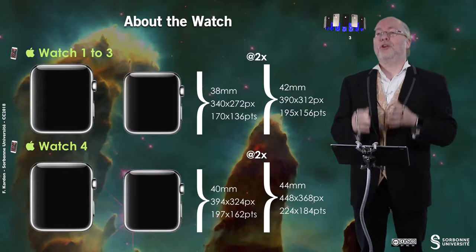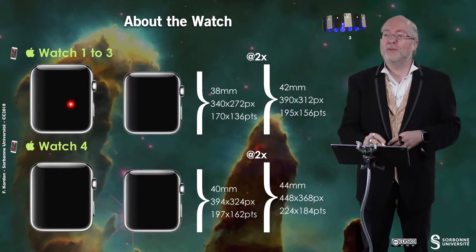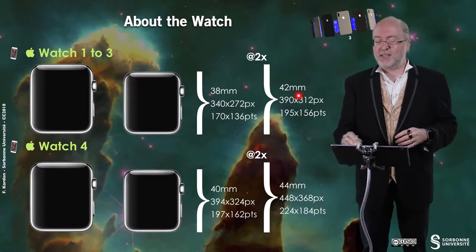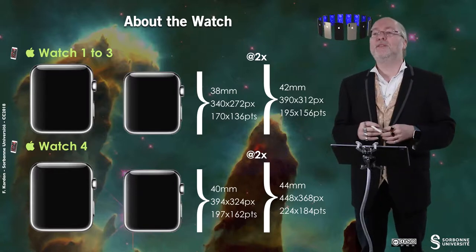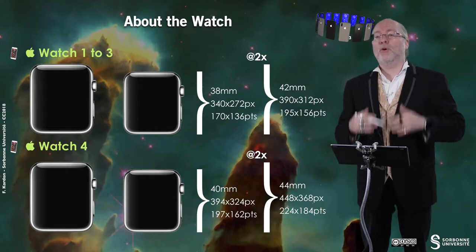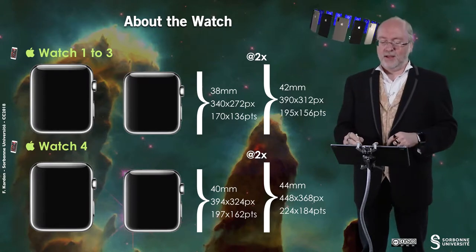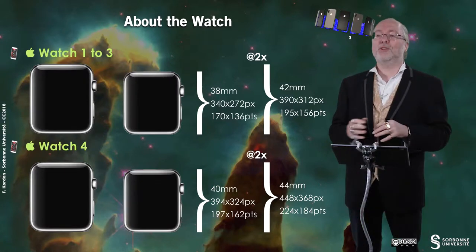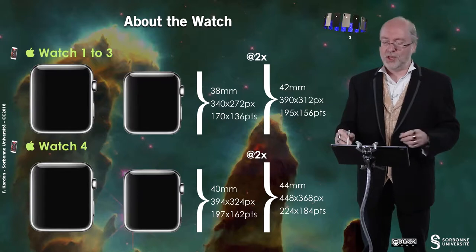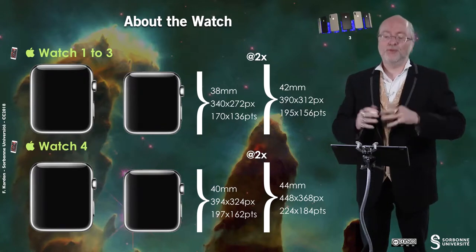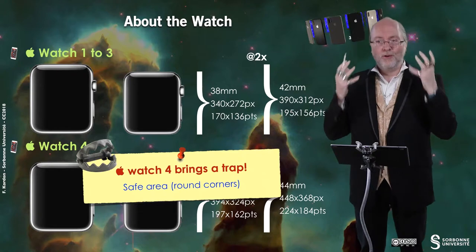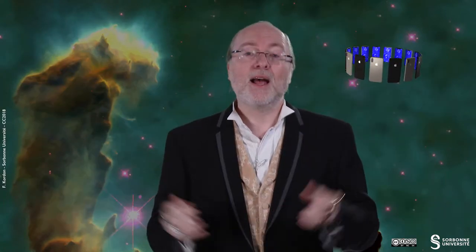You know that there were some changes recently. From the Apple Watch 1 to 3, you had two sizes: 38 millimeters for the small one and 42 millimeters for the large one, with a specific resolution and number of points, because it's a double resolution in terms of density for the screen. Recently, the Apple Watch 4 changed this — you now have 40 millimeters and 44 millimeters. The 40 millimeter watch actually has a wider screen than the 42 millimeters of the previous generation. So it means you have to deal with four sizes.